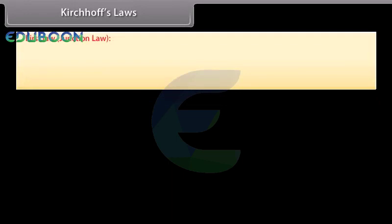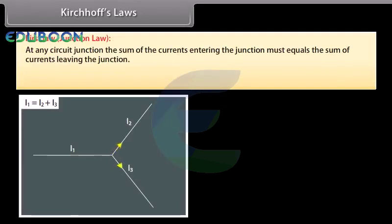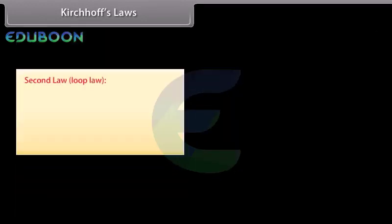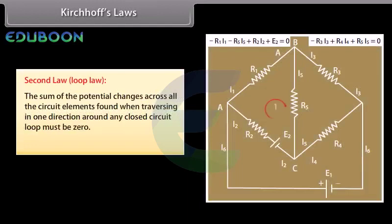Kirchhoff's First Law states that at any circuit junction, the sum of currents entering the junction must equal the sum of currents leaving the junction; the algebraic sum of currents is zero (ΣI = 0). Kirchhoff's Second Law states that the sum of all potential changes across all circuit elements when traversing in one direction around any closed loop must be zero (ΣΔV = 0).